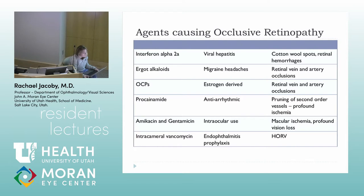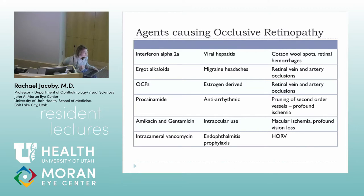Different medications can cause damage to retinal blood vessels. Interferon retinopathy presents with scattered cotton wool spots and associated retinal hemorrhages throughout the retina, which typically resolve once you stop the medication. Medications for migraine headaches, oral contraceptives, and estrogen-based hormone replacement therapy can all cause retinal vein and artery occlusions — something to keep in mind with a young woman presenting with a vein occlusion. Procainamide can cause profound ischemia and damage to second-order retinal vessels.